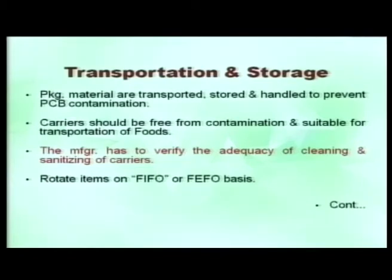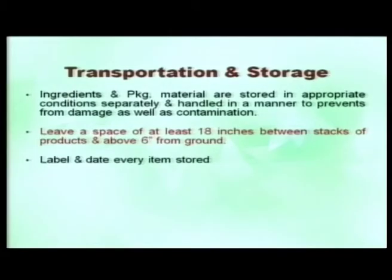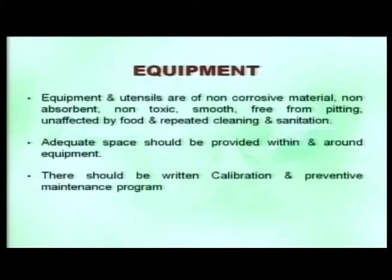Transportation and storage is the second important element. It covers transportation of packaging material and carriers which need to be free from contamination, with clear sanitation programs for carriers of high-risk commodities. In storage, a first-in-first-out or first-expiry-first-out mechanism should be followed. Ingredients and packaging materials should be stored in appropriate conditions, separately, and handled in a manner to prevent damage and contamination. Stacking should leave space between each stack — 18 inches is an example. Labels and dates should be clearly mentioned on every storage item.